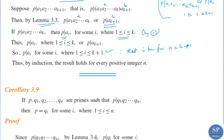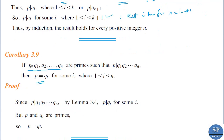Now we have a corollary of this lemma. If p, q₁, q₂, …, qₙ are primes such that p divides q₁·q₂·…·qₙ, then p = qᵢ for some i, where 1 ≤ i ≤ n. To prove this: we are given that p divides q₁·q₂·…·qₙ, where all qᵢ are primes and p is also prime. From the previous lemma, since p divides the product, p divides qᵢ for some i. But p is prime and qᵢ is also prime, and p divides qᵢ only if p = qᵢ. Therefore, p = qᵢ for some i.